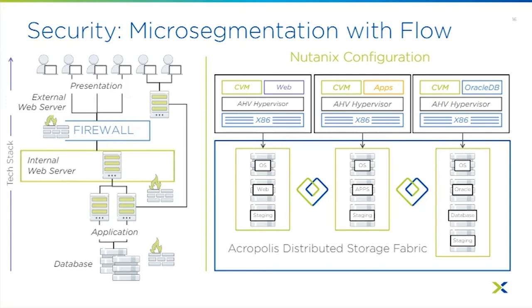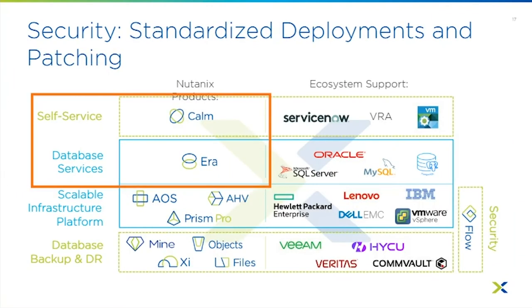You can use Era to manage and patch the database, and Flow to segment it. If there's an application issue as well, you can update or redeploy it using Calm via self-service, or Calm can call Era through APIs to update the environment automatically when a ticket comes in. Era uses software profiles that also help with security and patching standardization.